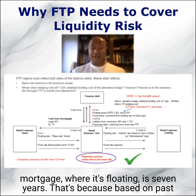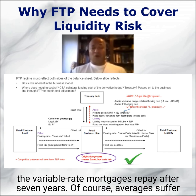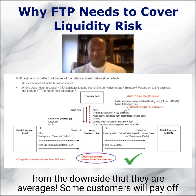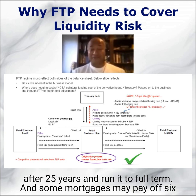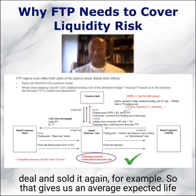That's because based on past customer behaviour, observed over the last 10, 20 years or longer, on average the variable rate mortgages repay after seven years. Of course, averages suffer from the downside that they are averages. Some customers will pay off after 25 years, run it to full term, and some mortgages may pay off six months later because a customer has bought the property as a speculative deal and sold it again, for example.